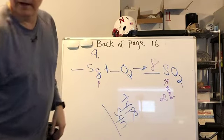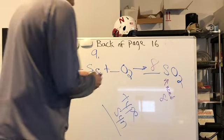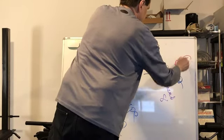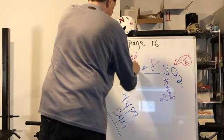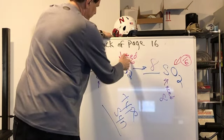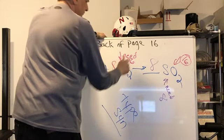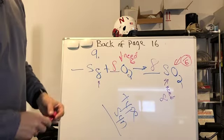So I do my O count next. I've got eight times two. I've got sixteen here for O. So my need here is sixteen. Two goes into sixteen eight times. Or eight times two gives you sixteen. And that one's balanced.